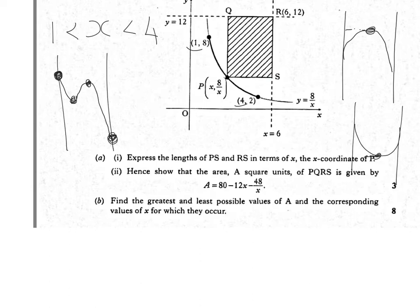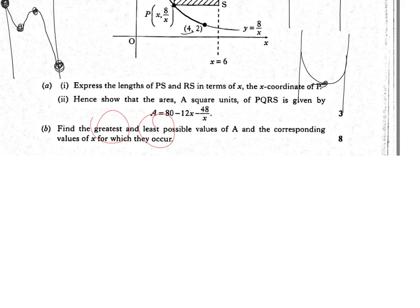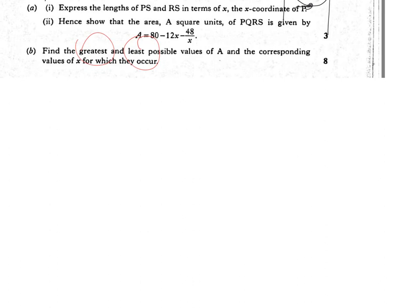So what we can say then with closed interval questions is to find the maximum and minimum values, and that's what we're looking for, the greatest and least possible values, they either occur at turning points or they occur at end points. What we need to do is to check both. So we're going to check turning points by differentiation and differentiating making equal to zero.